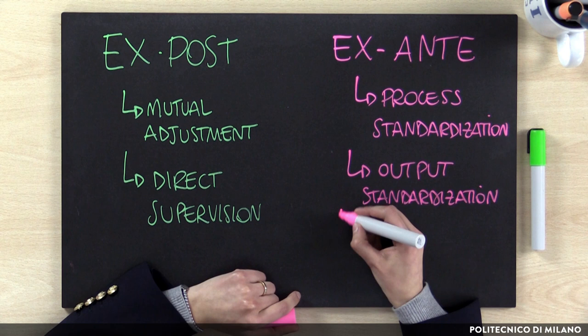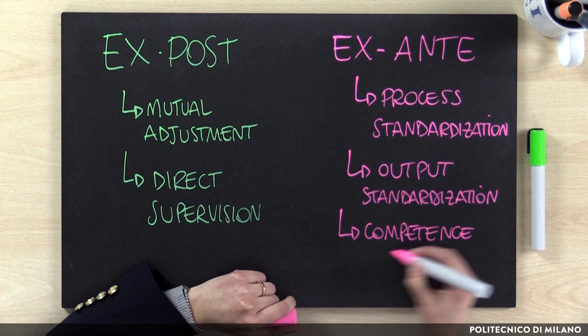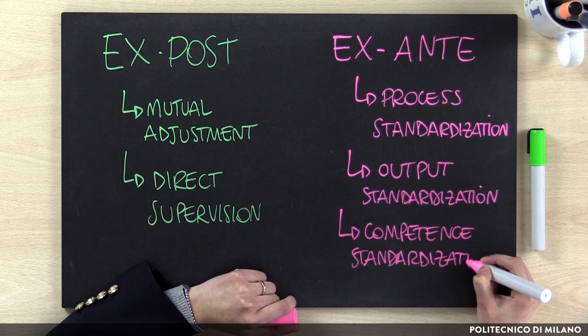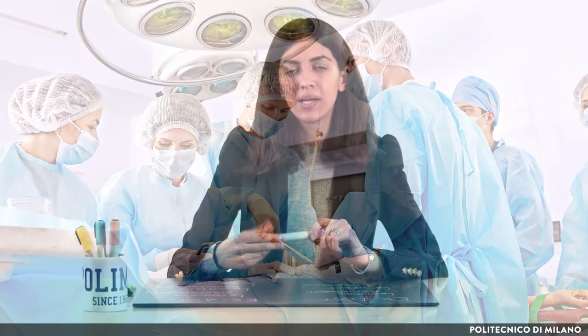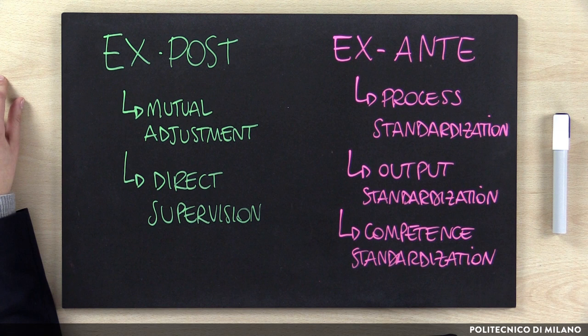Finally, the last coordination mechanism is related to competence standardization. In this case, what is defined are the competencies necessary to perform specific activities. An example of this mechanism might be the hiring of a surgeon based on their specific areas of expertise — for example, heart surgery is different from brain surgery. This mechanism is especially suitable in very turbulent environments, where process standardization is not possible and targets might not be reliable, so managers could simply hire and allocate the best people to solve problems that might occur.